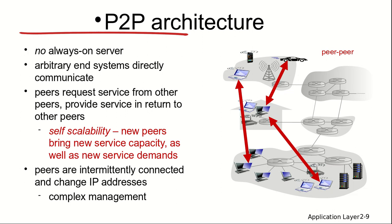When someone else from your contacts logs in, their IP address gets updated on the Skype server. When you initiate a call, it first goes to the Skype server, which provides the IP address of the relevant peer, and then you maintain direct communication with that peer. This is an example of a relative peer-to-peer architecture, and management is complex due to changing IP addresses — requiring some kind of intermediate broker.